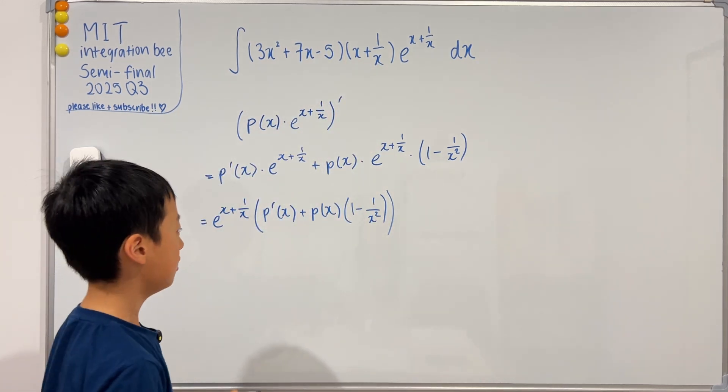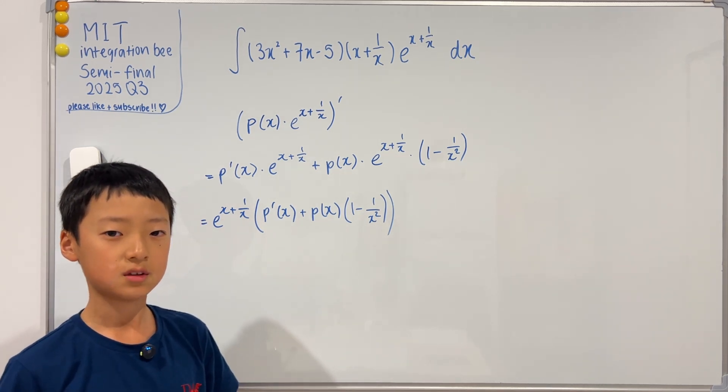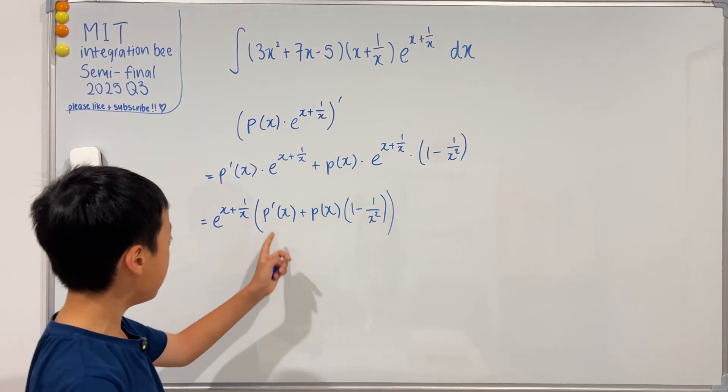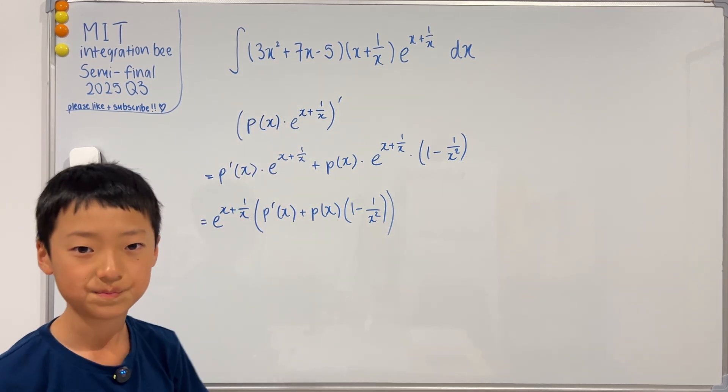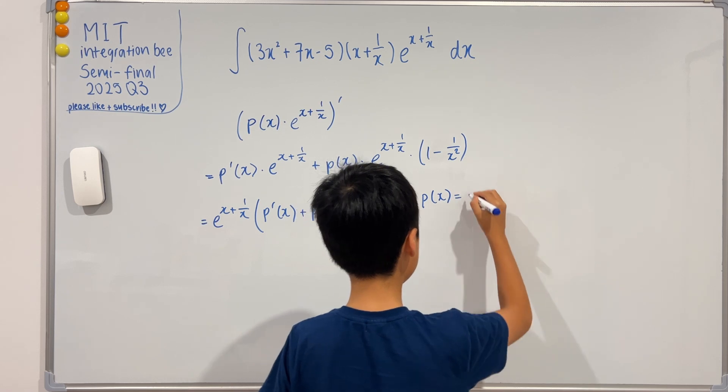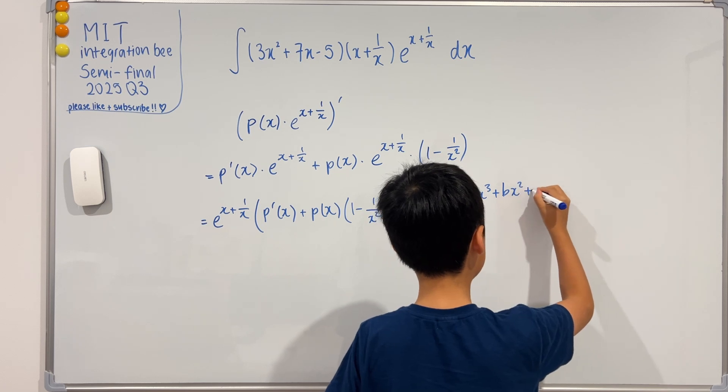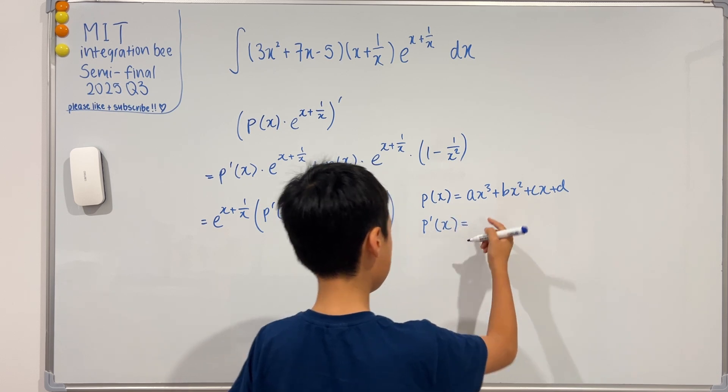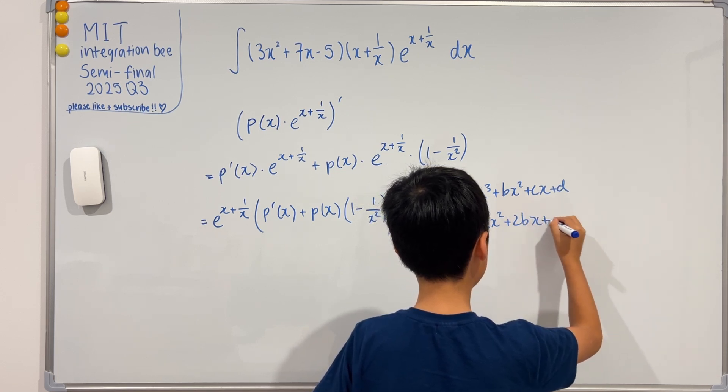But before we do that equation, we first need a valid guess about what the polynomial p of x would look like. In my opinion, I think p of x should have the degree of three, because then the derivative will have a degree of two, and that is what we want. So I'll let p of x equal ax cubed plus bx squared plus cx plus d, and p prime of x equals 3ax squared plus 2bx plus c.